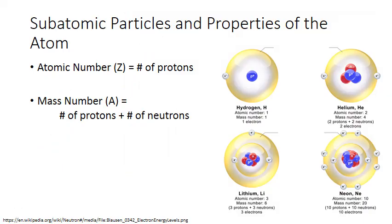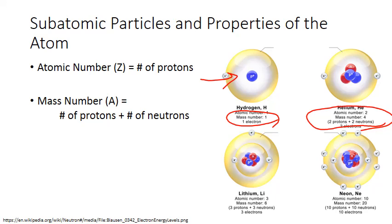The sum of the number of protons and neutrons is known as the mass number. This is not quite the same as the actual mass of the atom, but it gives us a whole number approximation. For hydrogen, we have one proton and zero neutrons, giving a mass number of one. For helium, two protons and two neutrons give a mass number of four. For lithium, three protons and three neutrons give a mass number of six. And neon, 10 protons plus 10 neutrons, gives a mass number of 20.